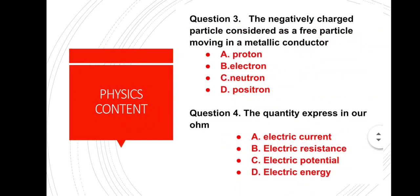Question number 3: The negatively charged particle considered as a free particle moving in a metallic conductor. Options: proton, electron, neutron, and positron. The correct answer is option B — electron is the negatively charged particle.